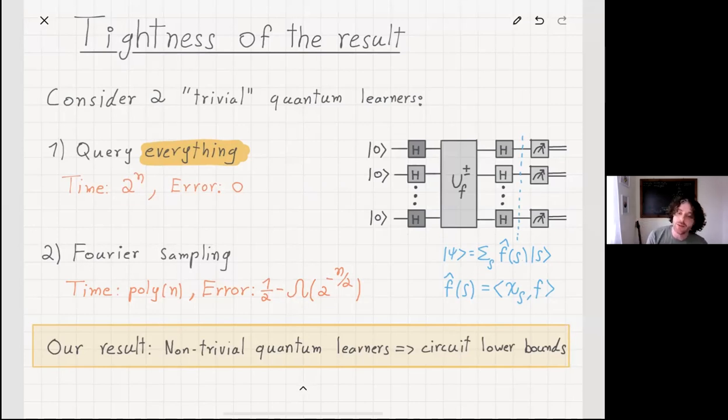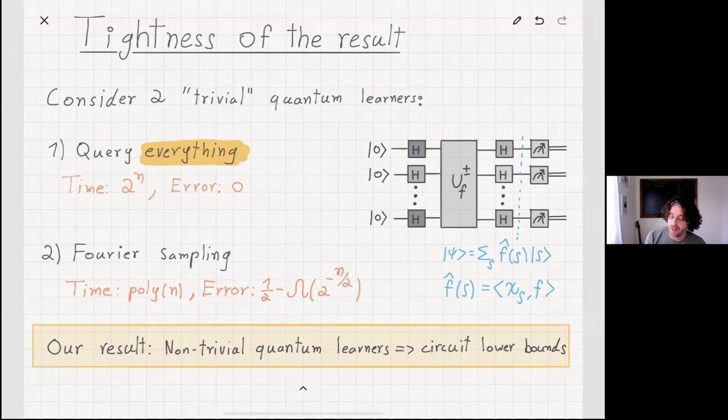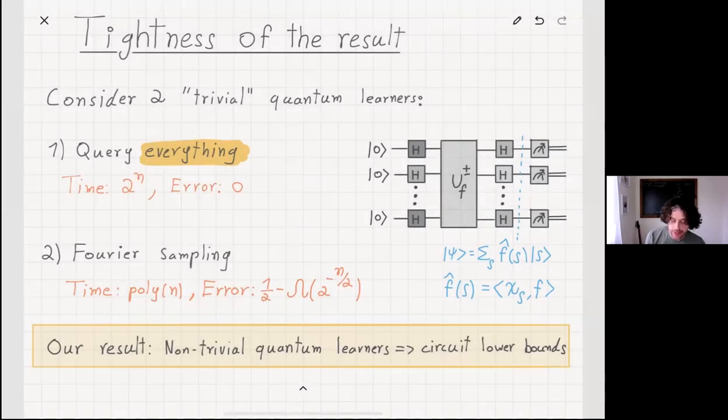You can show that with high probability, we will always see some Fourier coefficient with at least non-trivial weight. Because the definition of Fourier coefficient is simply the correlation of a function with a certain Fourier monomial, then just by outputting this monomial will give us some non-trivial distinguishing advantage. The point is that if you plug this into the previous statement, you'll see that any non-trivial quantum learner, any slight improvement on these two trivial learners will imply circuit lower bounds.